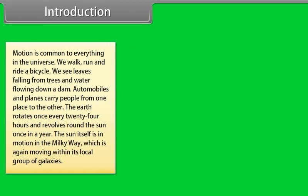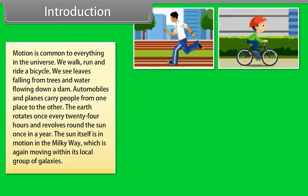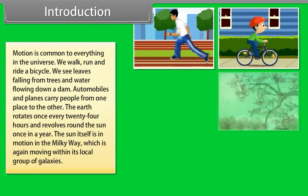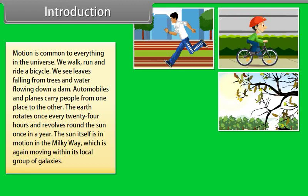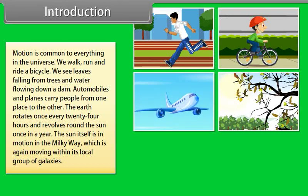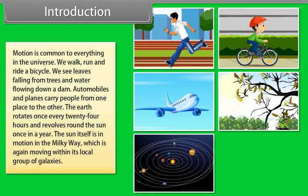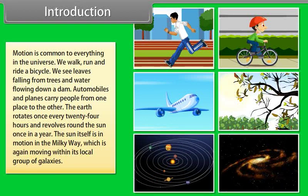Introduction: Motion is common to everything in the universe. We walk, run, and ride a bicycle. We see leaves falling from trees and water flowing down a dam. Automobiles and planes carry people from one place to another. The earth rotates once every 24 hours and revolves around the Sun once a year. The Sun itself is in motion in the Milky Way, which is again moving within its local group of galaxies.